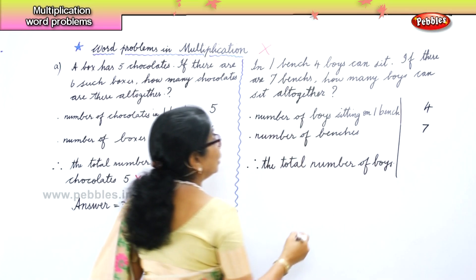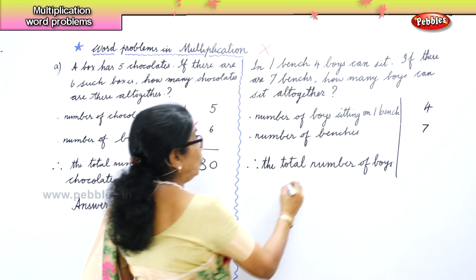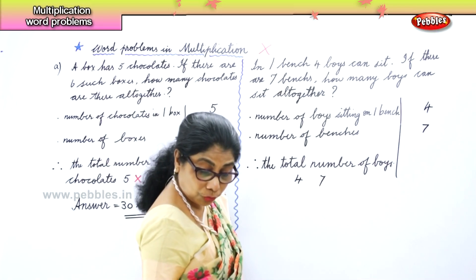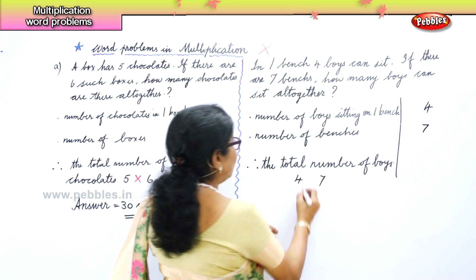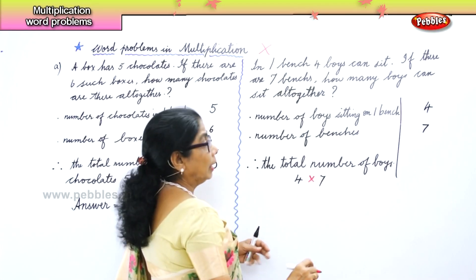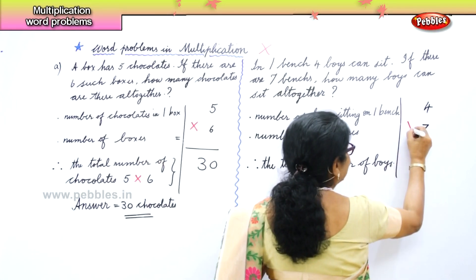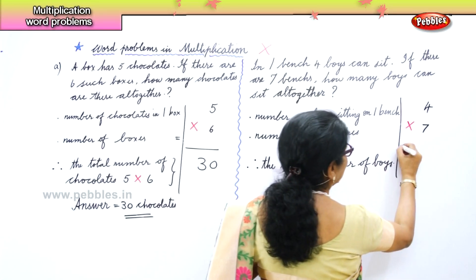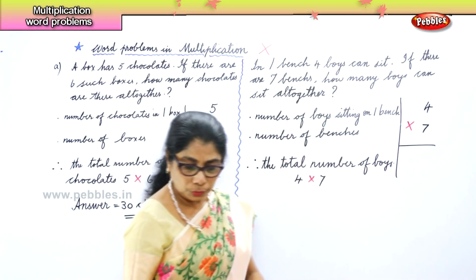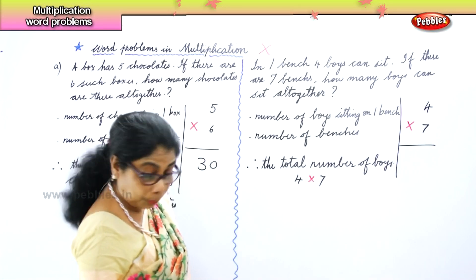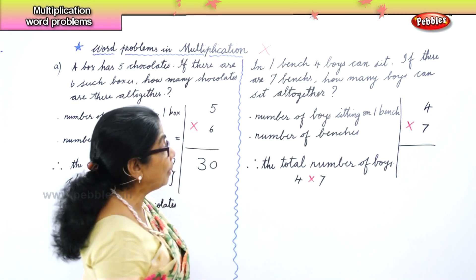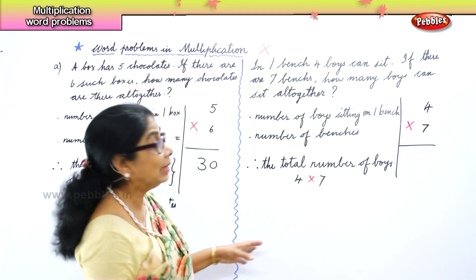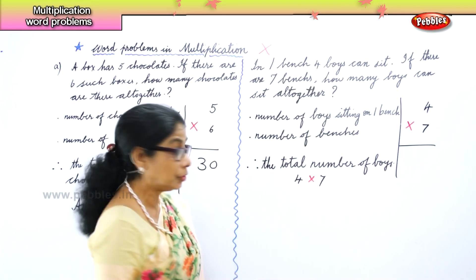Four boys in one bench, so four into seven — that is what you write. You are multiplying four into seven. How many boys are there in one bench? Four. How many benches are there? Seven.